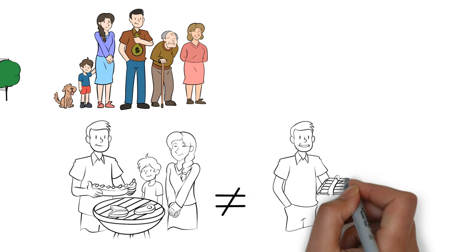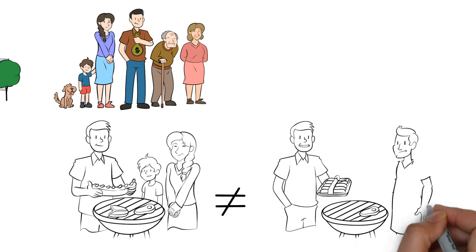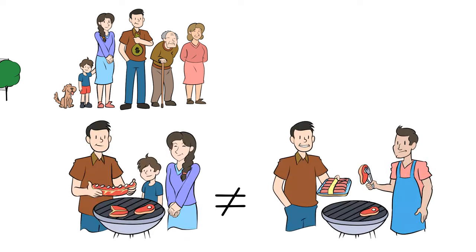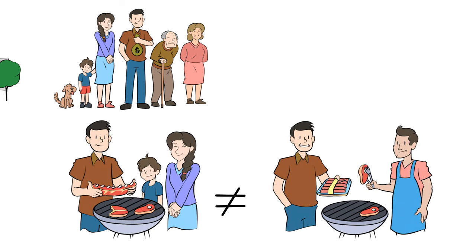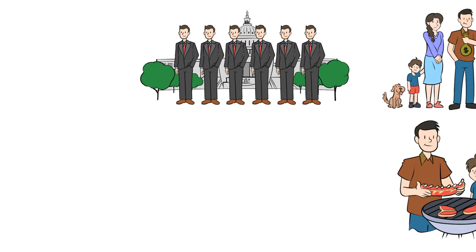But how do your priorities shift when you buy something for a stranger? You likely prioritize price well over quality. Now imagine that you're spending someone else's money.